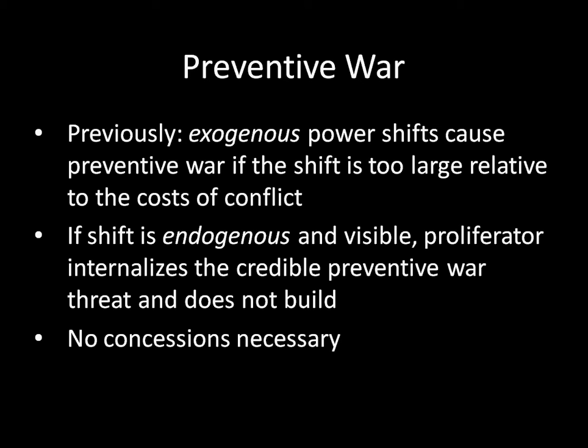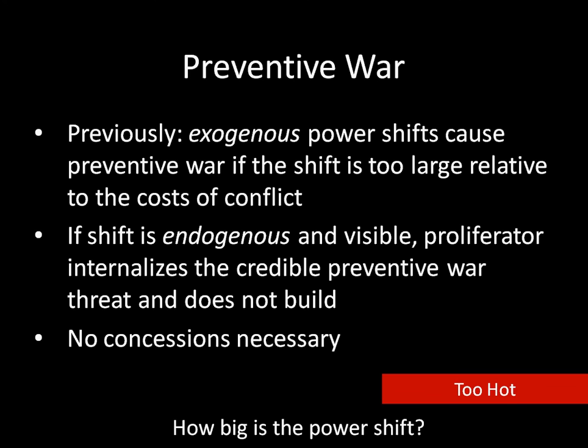We can diagram what's going on with the three different reasons why countries don't proliferate. In the case of preventive war, we're looking at a power shift that is too hot. The declining state sees how large that power shift is going to be, it's relatively large compared to the costs of war, so its threat to prevent is credible—and that convinces the potential rising state, that potential proliferator, not to develop the weapon. That's the first explanation: the threat of preventive war.